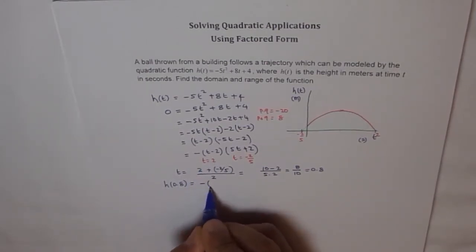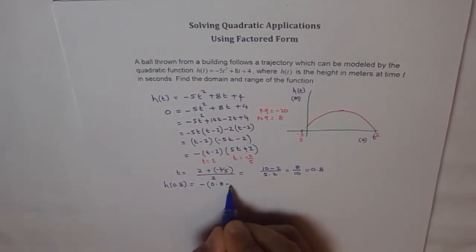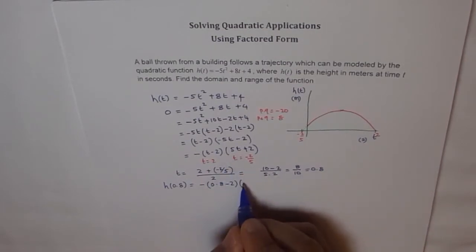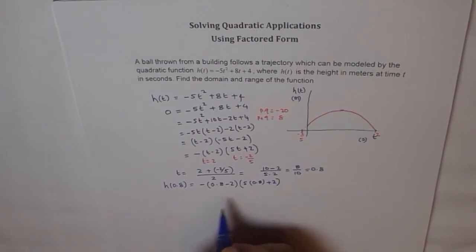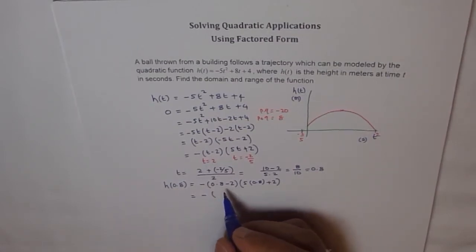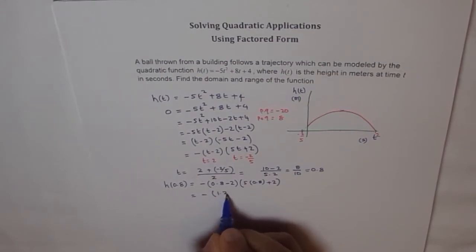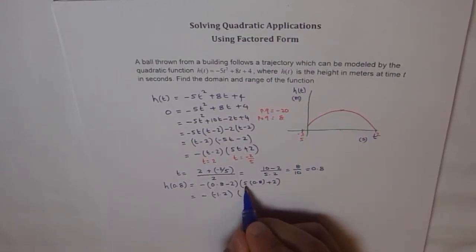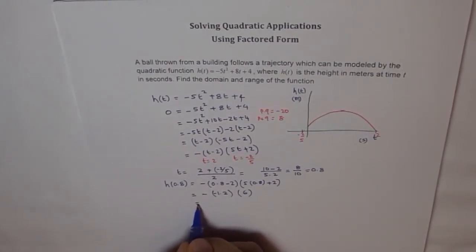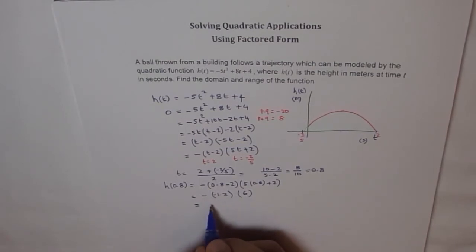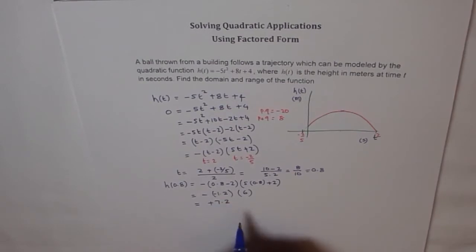At h(0.8) we have the maximum value, so we can plug in 0.8 here. We get 0.8 minus 2 times 5 times 0.8 plus 2. Let us calculate this value. 0.8 times this will give us - this is 4, 8 times 5 is 40, 4 plus 2 is 6. We get 6 times this, minus minus becomes plus, and we get 7.2. So 7.2 is our height, and this height is in meters.